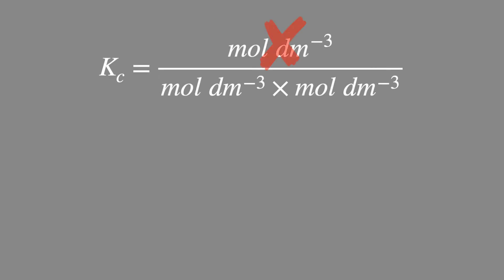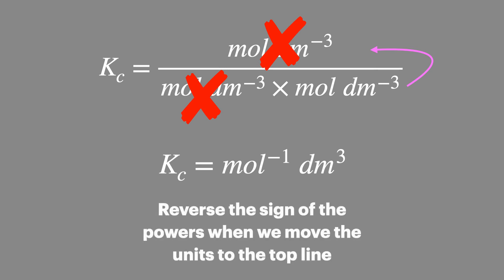This is a slightly more complicated example and in this case one set of units from the top cancels with one set from the bottom but we're left with a set of units on the bottom of the equation. We can move this up to the top line and in doing so we change the moles to be minus one decimetres to be the power of minus three.